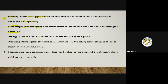Valuing refers to the ability to see the value or worth of something and express it. Organizing means putting together different values and information and relating them to already-held beliefs to create your own unique value system. In characterizing, you act consistently in accordance with the values you have internalized — willingness to change one's behavior or way of life. Now it is inbuilt in you. So in affective domain the trick was R2VOC: R for receiving, R for responding, V for valuing, O for organizing, C for characterizing.